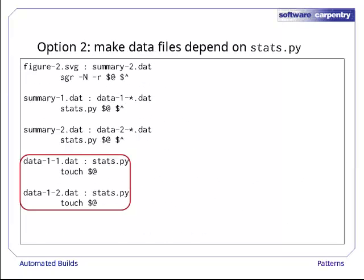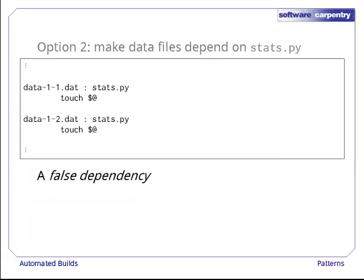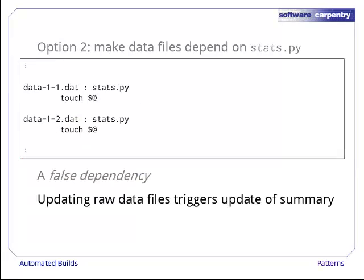A second option would be to move the dependency down and pretend that the raw data files depend on stats.py. This is called a false dependency. The raw data files don't really have to be updated when stats.py is changed, but with this false dependency in our makefile, make will update the timestamps on the raw data files when stats.py changes, which will in turn trigger an update of the summary files.